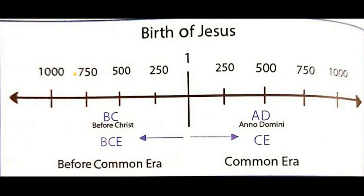We count the years before the birth of Christ backwards. After Christ's birth, we count the years forward. AD comes from the Latin word anno Domini, meaning 'in the year of our Lord.' It refers to the years since the birth of Christ up to the present time. It is also known as CE — Common Era.